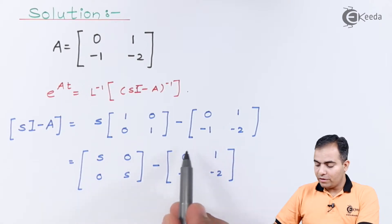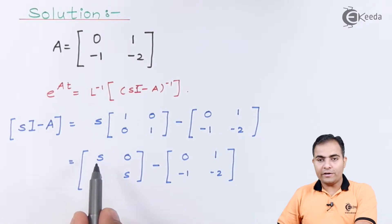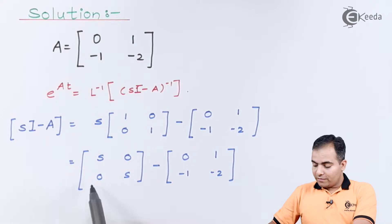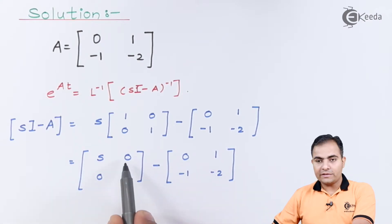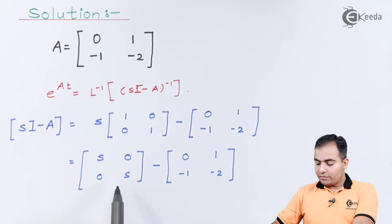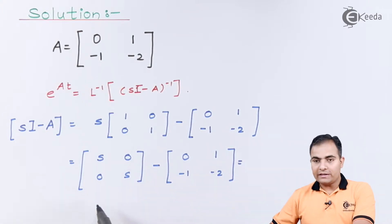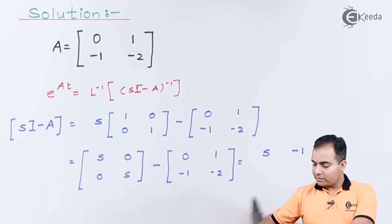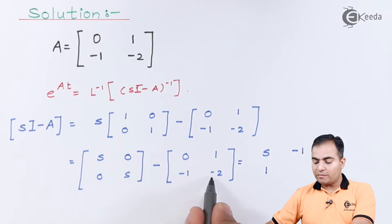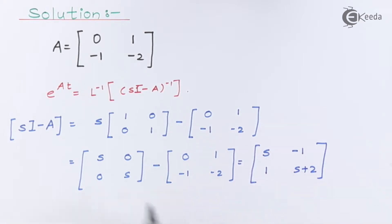Now subtract the state matrix A from s·I. Performing element-wise subtraction: first row first element: s - 0 = s; first row second element: 0 - 1 = -1; second row first element: 0 - (-1) = 1; second row second element: s - (-2) = s + 2. This gives us the (sI - A) matrix.